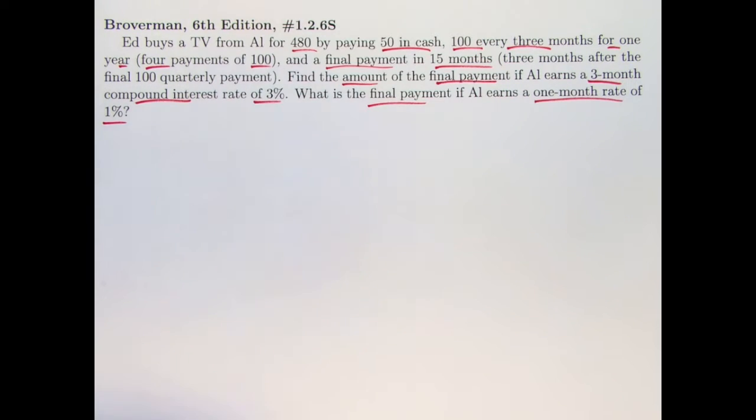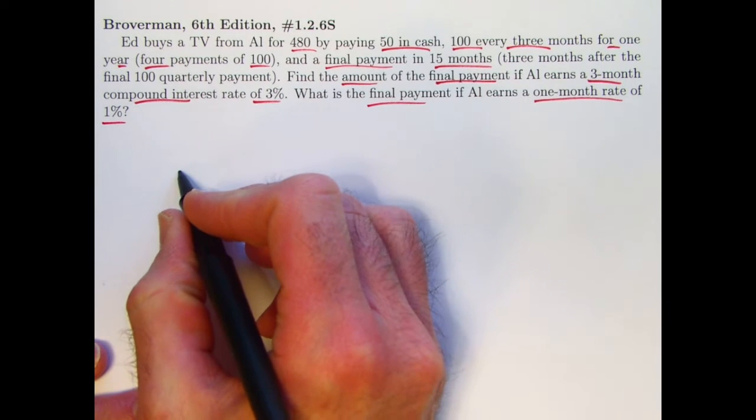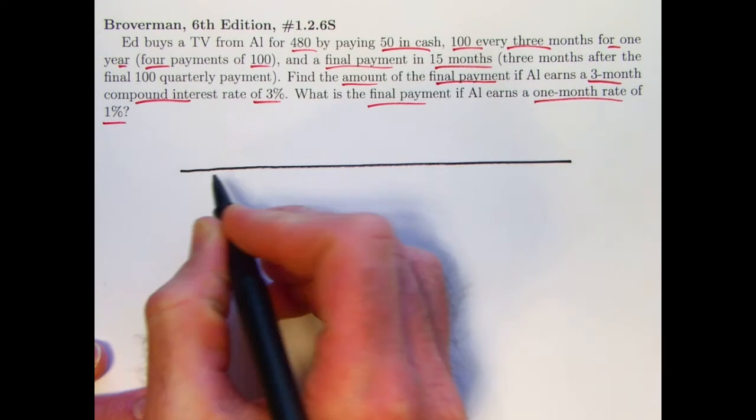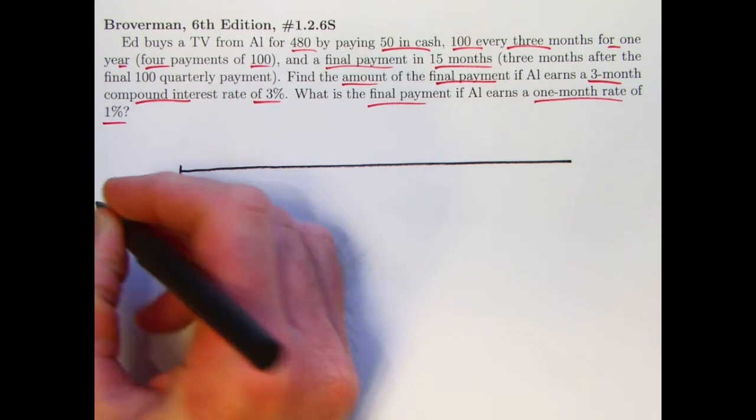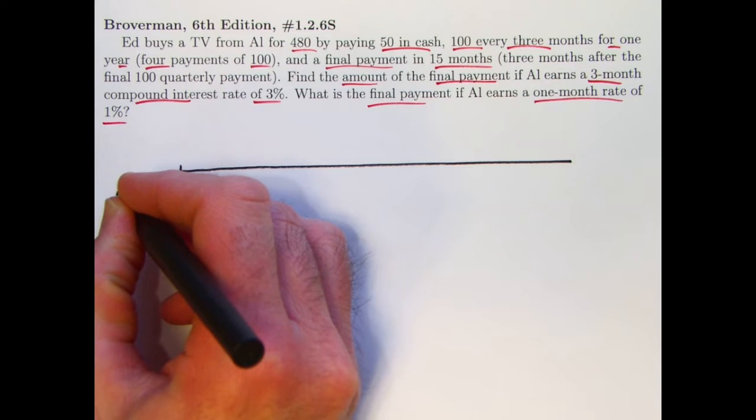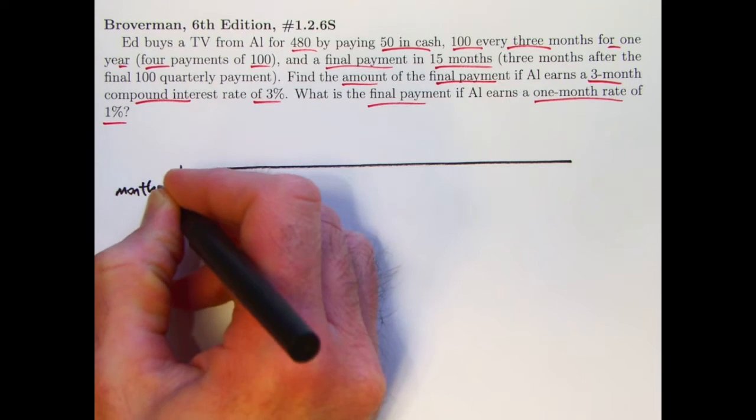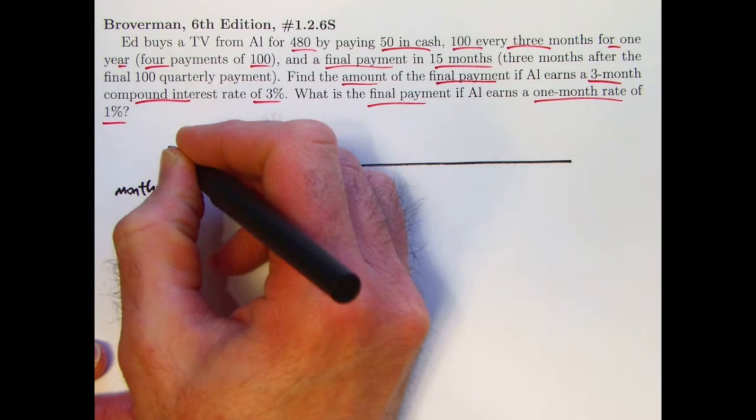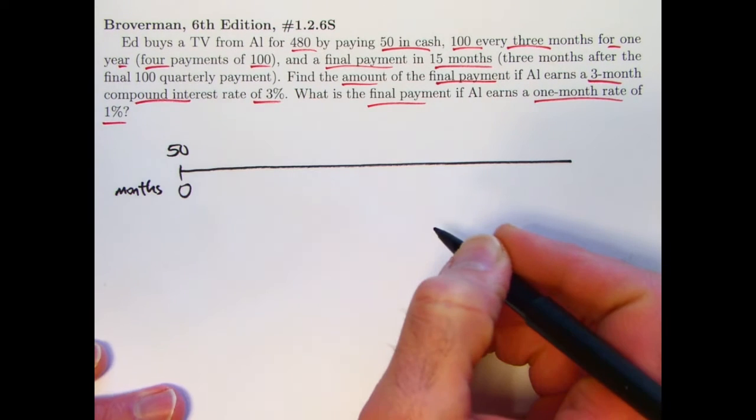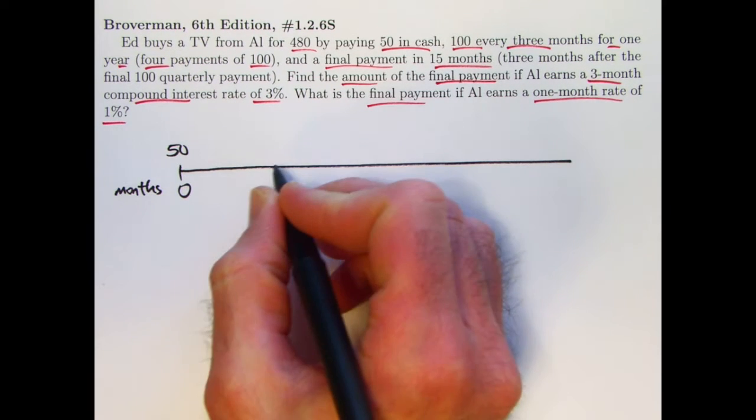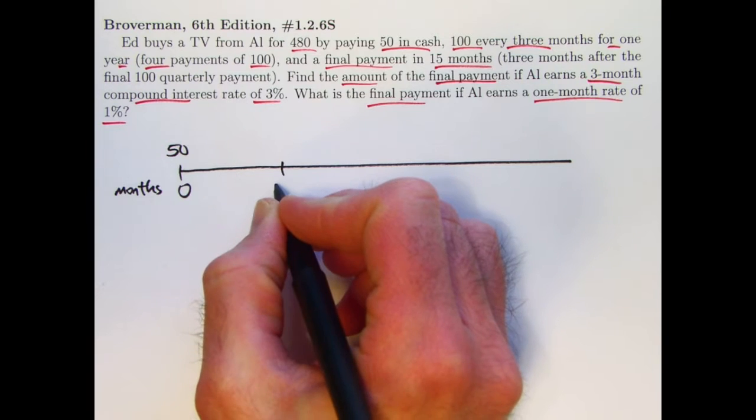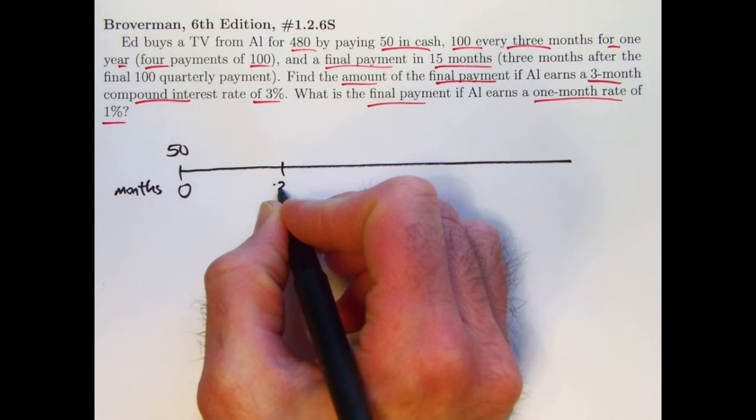So let's set up a number line to help us think this through. It's going to be best to label time in months here instead of years. So there's this $50 payment at time zero right away.